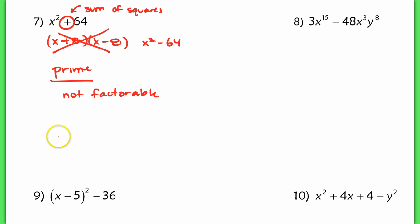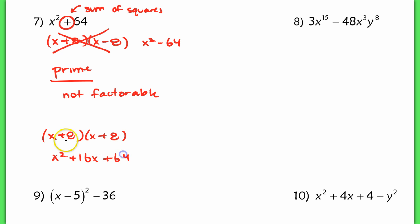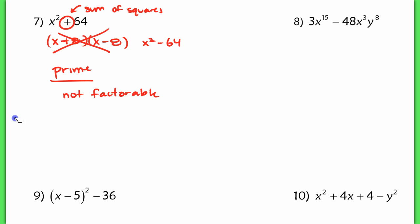Some people think: what about x plus 8 and x plus 8? Well, with x plus 8 and x plus 8, you end up with a middle term of 16x, which is clearly not your original problem. So this is not factorable. We call that prime.